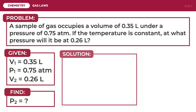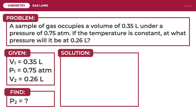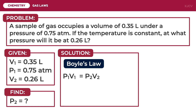Since there are changes in the volume and pressure of the gas, and the temperature is kept constant, this is governed by Boyle's law, which is mathematically written as P1 × V1 = P2 × V2. Since we are solving for the final pressure, we derive the formula by dividing both sides of the equation by V2. Thus, P2 = (P1 × V1) / V2.